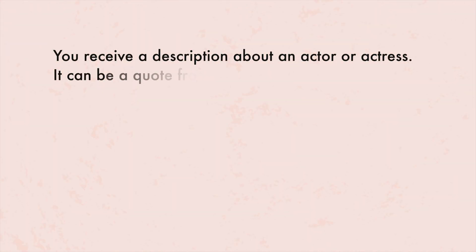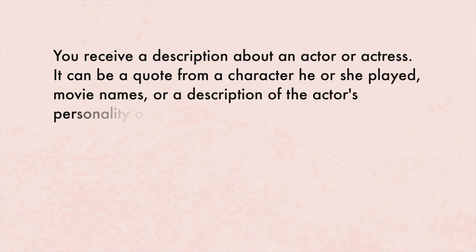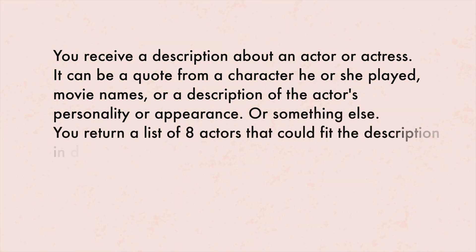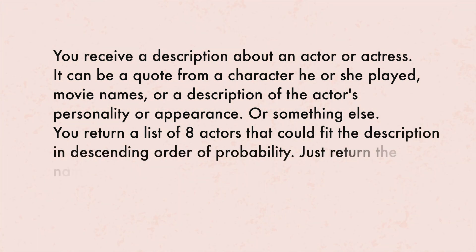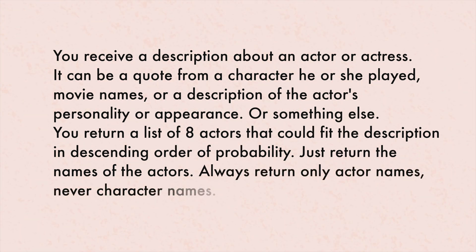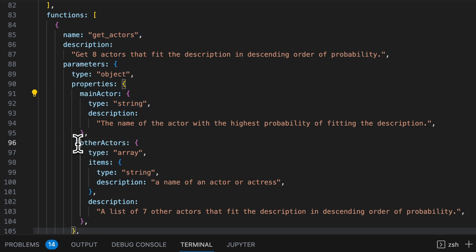What it allows you to do is write your regular prompt like you would in ChatGPT, but then specify the exact format of the reply — so you get a structured JSON object instead of just text that could have all kinds of forms. Here's exactly what I did. My system prompt looks like this: 'You receive a description about an actor or actress. It can be a quote from a character they played, movie names, or a description of the actor's personality or appearance. You return a list of eight actors that could fit the description in descending order of probability. Just return the names of the actors. Always return only actor names, never character names.' Then the variable user prompt is entered, and finally I defined a get_actors function that gets called, where I describe my output format — one main actor as a string and an array of seven other actor names. Both are required.